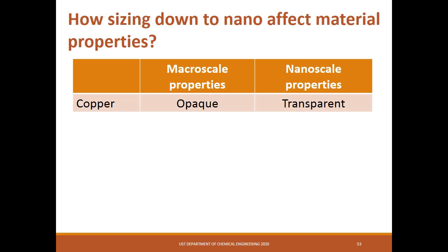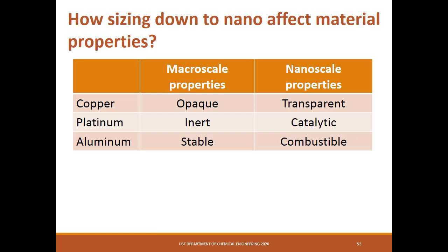Another example is platinum, a noble metal that is inert by nature. However, at nanoscale, it becomes catalytic — it can catalyze the ignition of hydrogen gas and catalyze the reaction of toxic carbon monoxide with oxygen to produce less harmful carbon dioxide. Aluminum is commonly used in doors or window screens due to its lightweight stability and resistance to rust. However, at nanoscale, aluminum can combust easily upon contact with air and moisture.